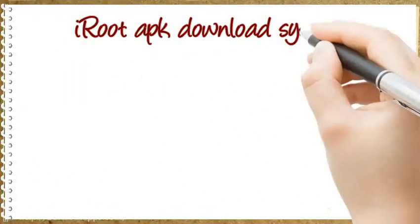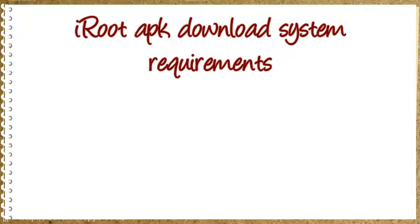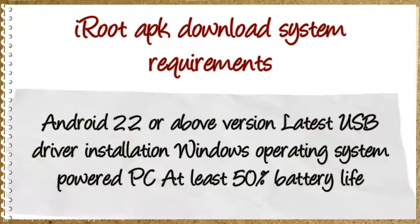iRoot APK Download System Requirements: Android 2.2 or above, latest USB driver installation, Windows operating system powered PC, and at least 50% battery life. Rooting using the iRoot app is an easy task.